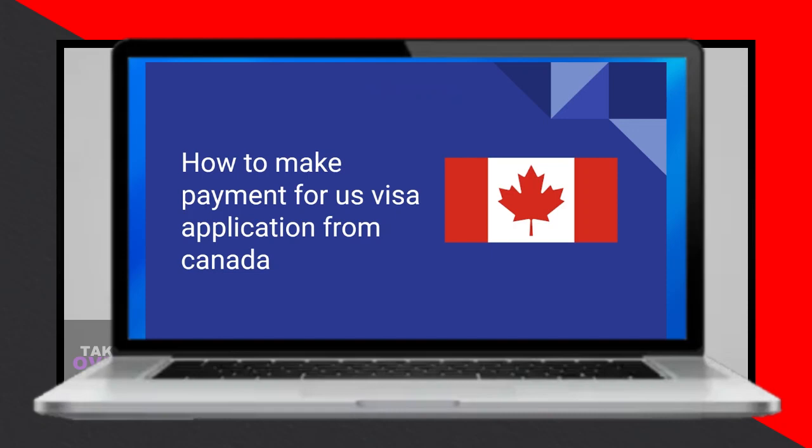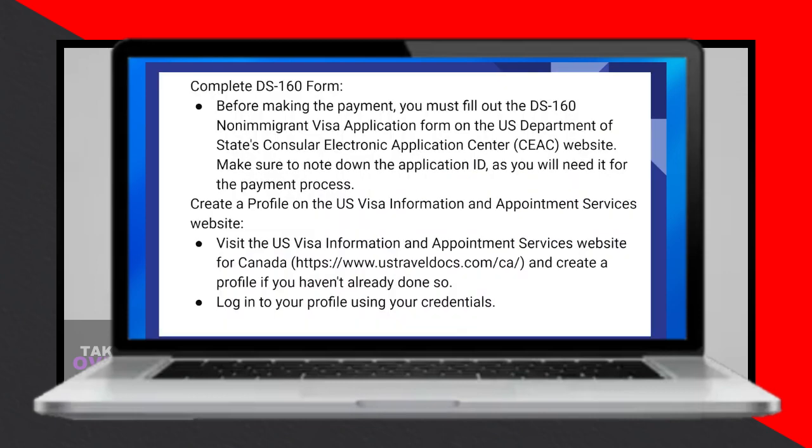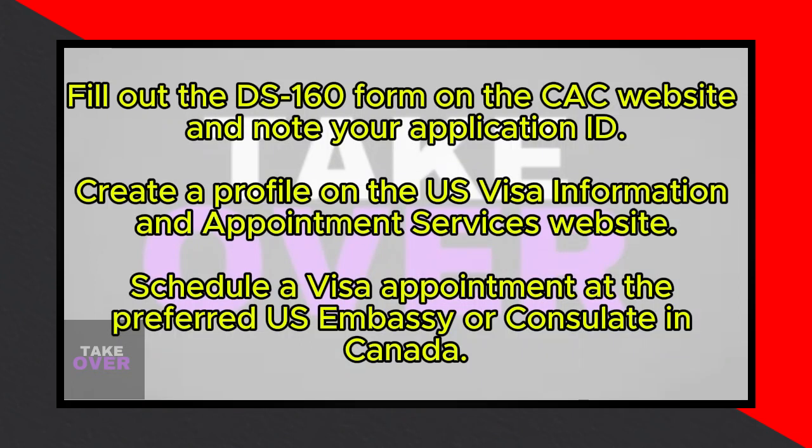Paying for a U.S. visa application from Canada is a straightforward process. Let me guide you through the steps. Firstly, ensure you've filled out the DS-160 Non-Immigrant Visa Application Form on the U.S. Department of State's Consular Electronic Application Center (CEAC) website and note down your application ID.